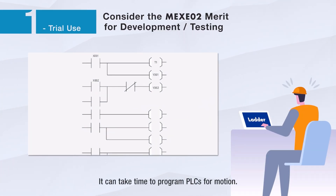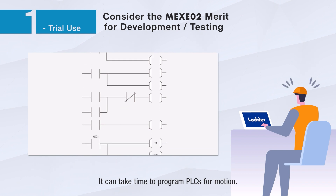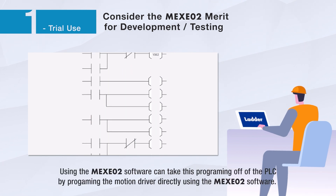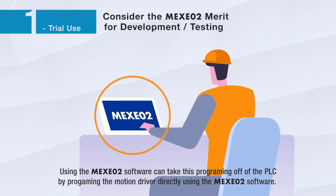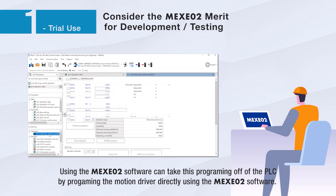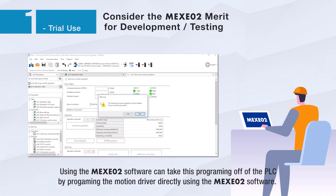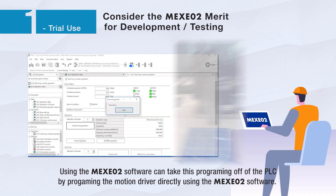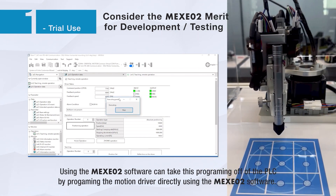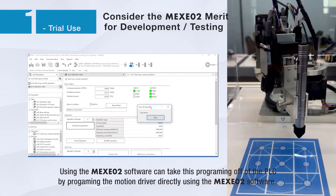During the trial phase of machine development, creating programs in the PLC can be hard and even harder to test and troubleshoot. The MEXE-02 support software can take the burden off of the PLC by setting parameters directly into the motor driver, thus simplifying the PLC's work.